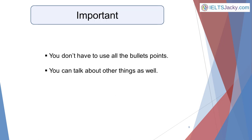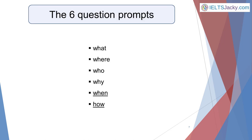There are two important things you need to know at this point. First, you don't have to use all the bullet points. Second, you can talk about other things as well. You may find you have plenty to talk about using the question prompts on your cue card. However, you need to be prepared in case you don't have enough ideas, or one or more of the bullet points doesn't fit what you want to say. There are six question prompts altogether, so add any that aren't already on the cue card — in this case, just two. Here's the full list of all six prompts, with the two extra ones underlined: What, Where, Who, Why, When, and How.